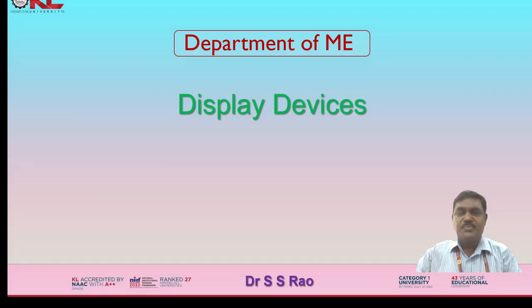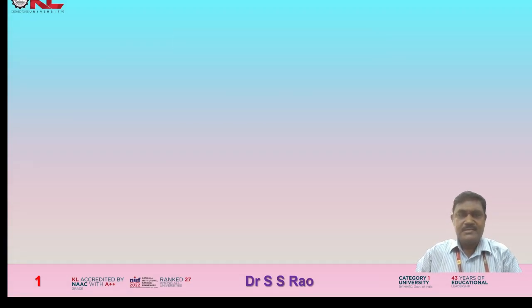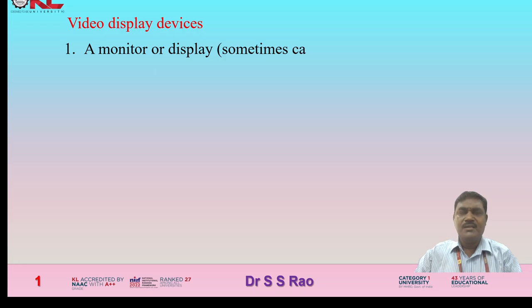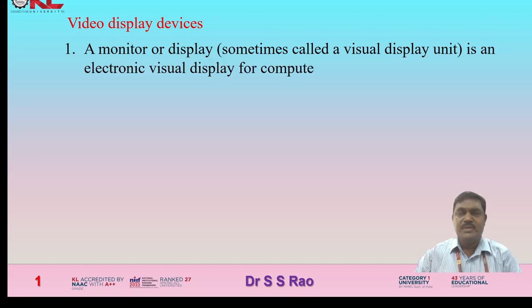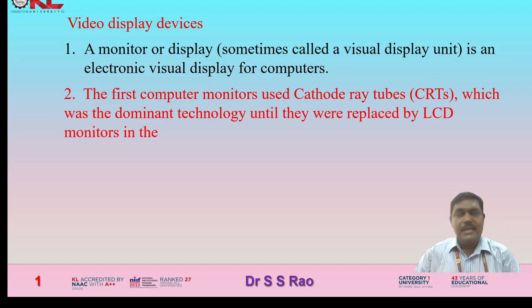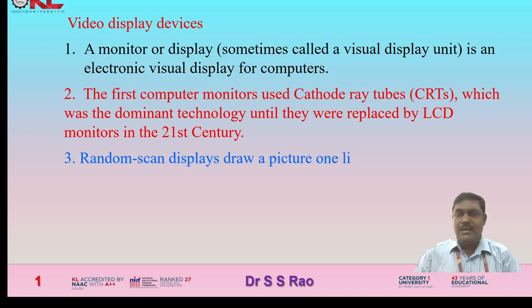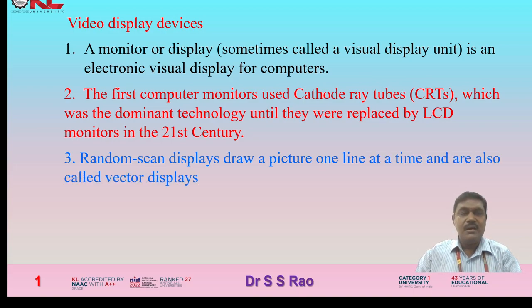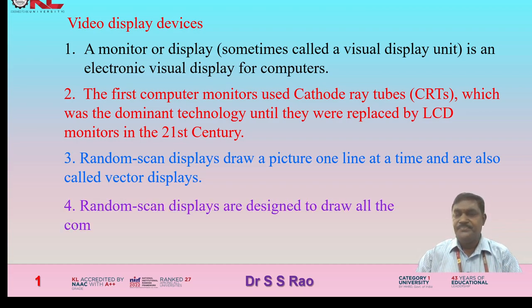In this video, we will explain the different CAD display devices. Video display devices: a monitor or display, sometimes called a visual display unit, is an electronic visual display for computers. The first computer monitors used cathode ray tubes (CRTs), which were the dominant technology until replaced by LCD monitors in the 21st century. Random scan displays draw a picture one line at a time and are also called vector display devices.